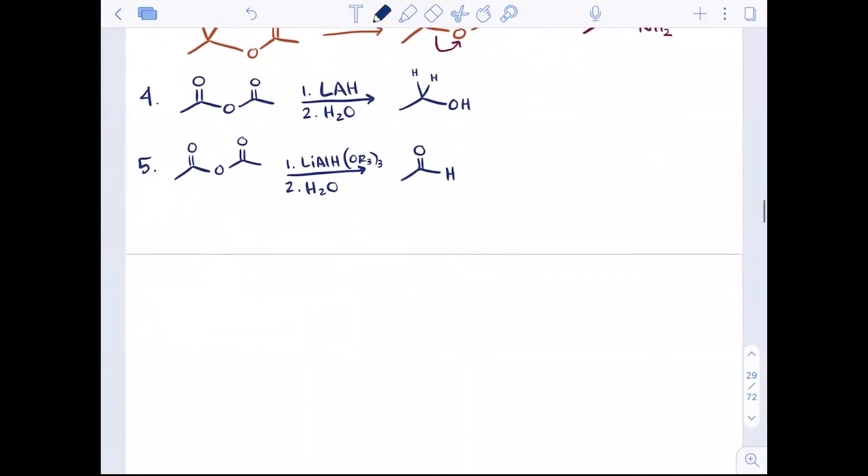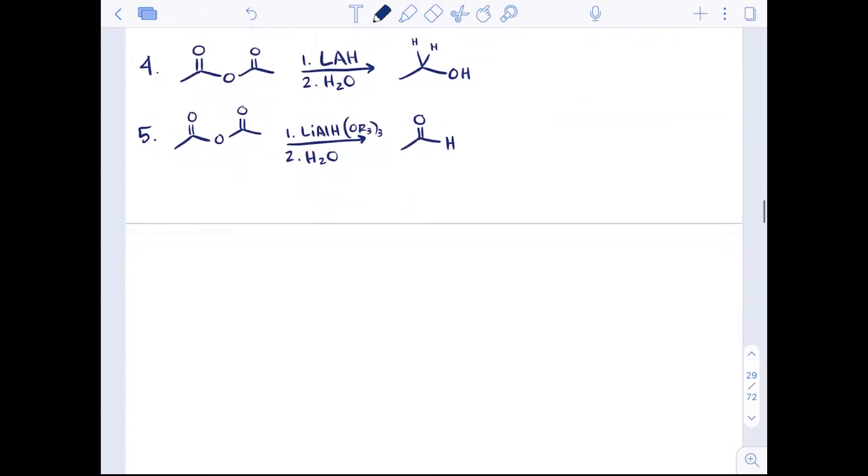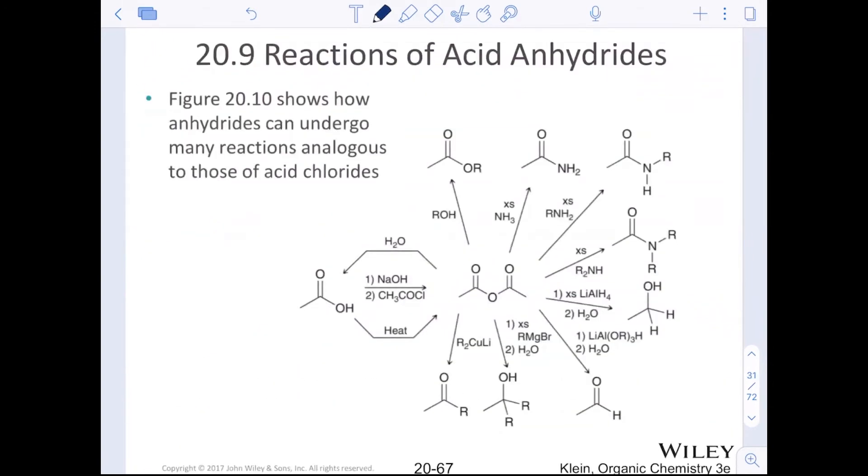We can also use Grignard reagents on our acid anhydrides. Just like before, a Grignard reagent would act twice to make tertiary alcohols and add two equivalents of that R group. Cuprates can react as well, so we can see those also add just one equivalent of R group. We'll talk about cuprates again more specifically in Chapter 21.